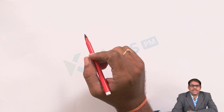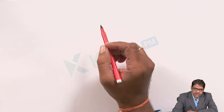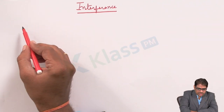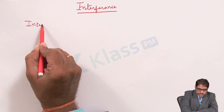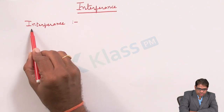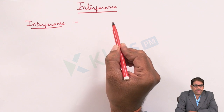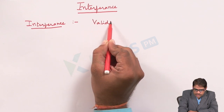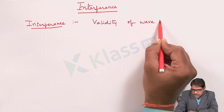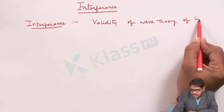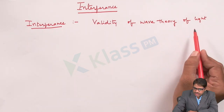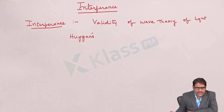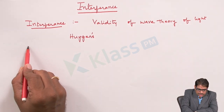Today let us discuss about the interference of light. The phenomenon of interference has proved the validity for the existence of the wave theory of light, which was explained by Huygens. Let us get through the introduction part regarding interference.